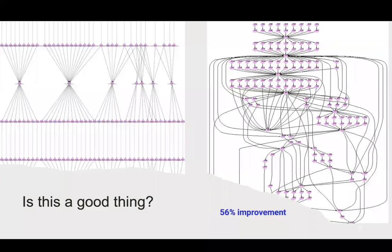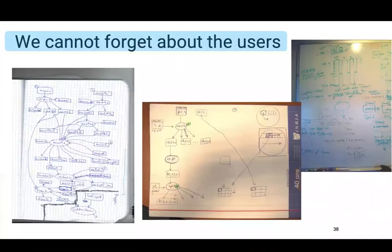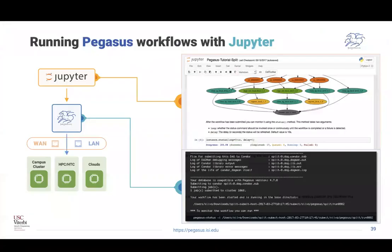We showed the restructured workflow to LIGO. The question was: is it a good thing? It turns out it's not, because LIGO scientists could understand the original structure but could not understand the restructured one on the right. Again, many years after our first LIGO episode — they taught us many lessons over the years. We cannot forget about the users. We need to think of ways to go from these complex workflow drawings to something they can manage. So far, the best we could do is Jupyter notebooks, but I'm hopeful that maybe with ChatGPT we can train on workflows and have a better way of generating them.